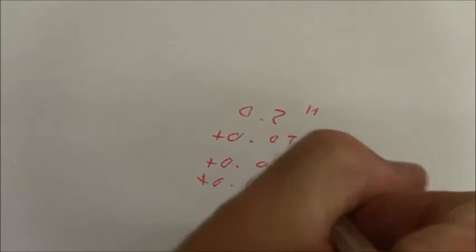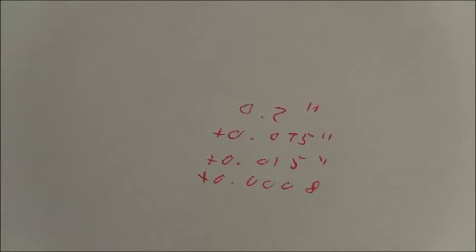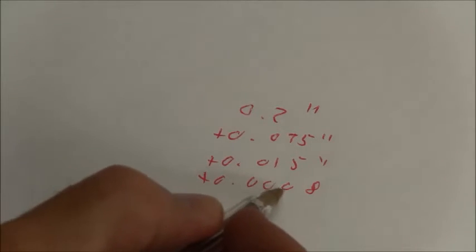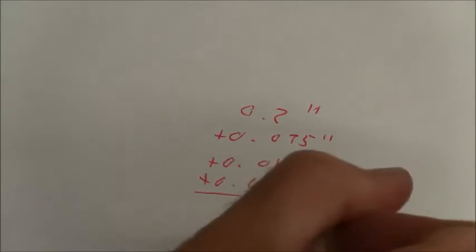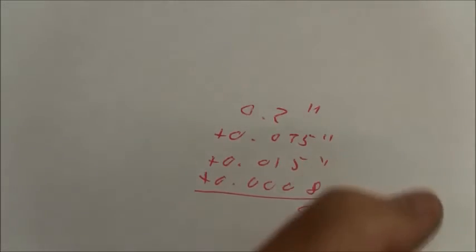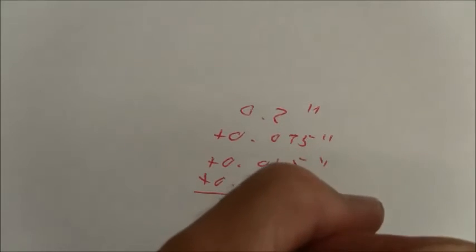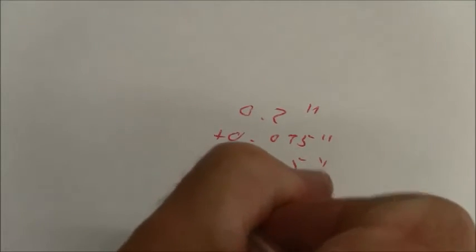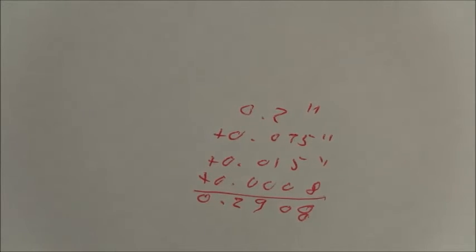So then I add - it's eight ten-thousandths. So it's the fourth decimal place: tens, hundreds, thousands, ten-thousandths. Now I can add them up. That's an eight. That's a ten. Carry one. That's a nine. That's a two. Zero point two nine zero eight inches is the thickness of that pen.